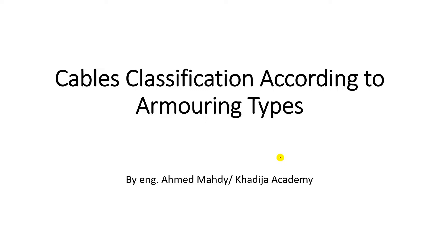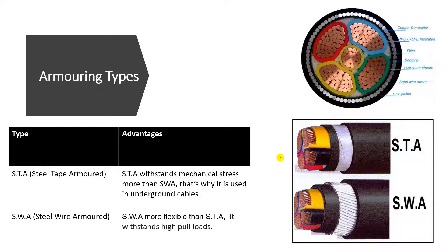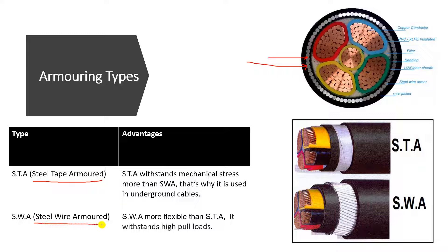In this lesson we are going to classify our cables according to the armoring types. We said before that the armoring provides a mechanical protection for our cable. This armoring has two main types: first is the steel tape armored cable, and the steel wire armored cable.